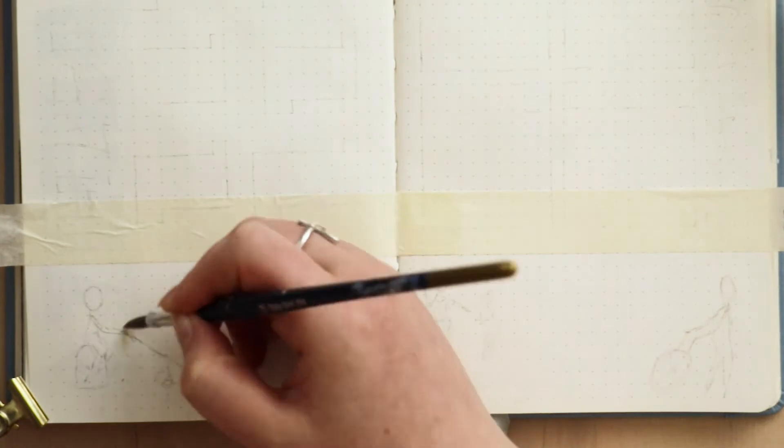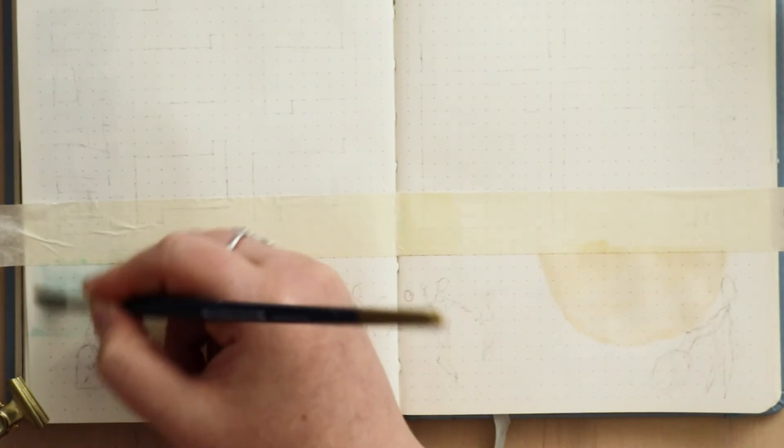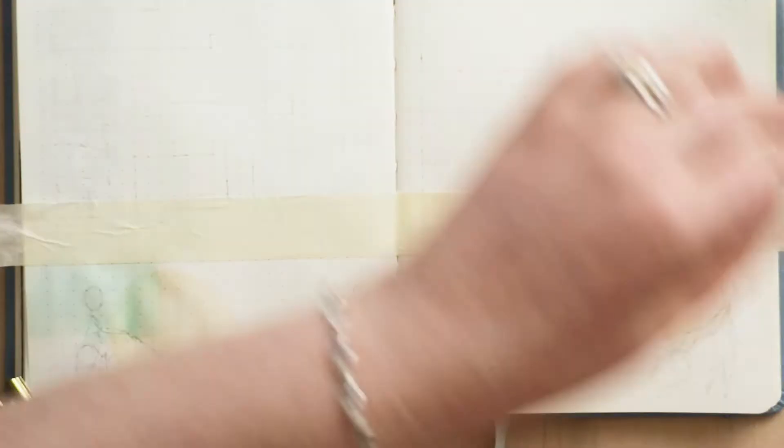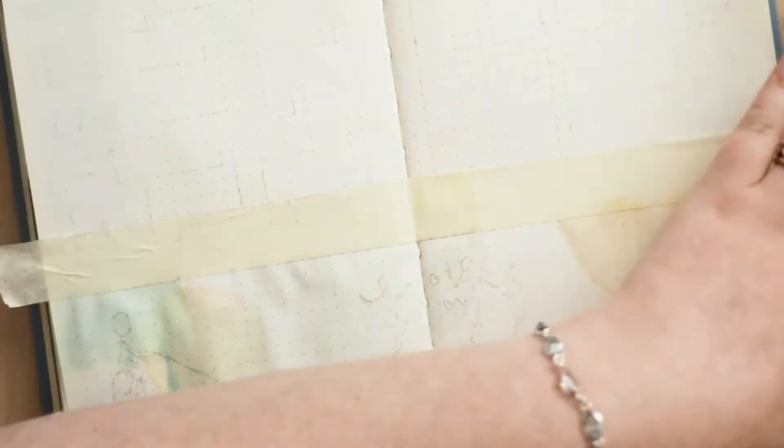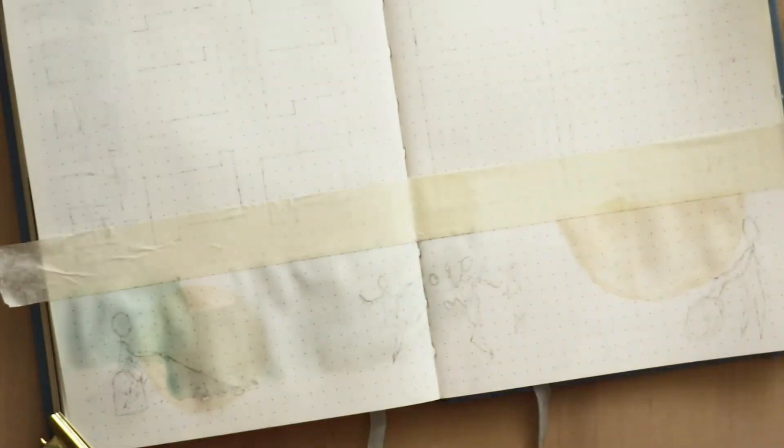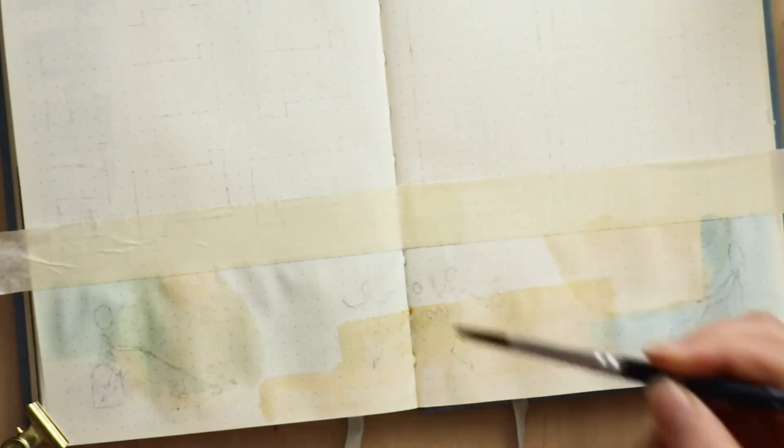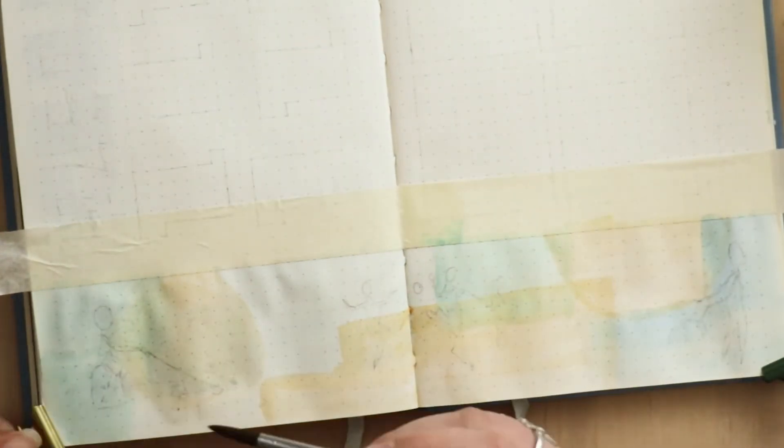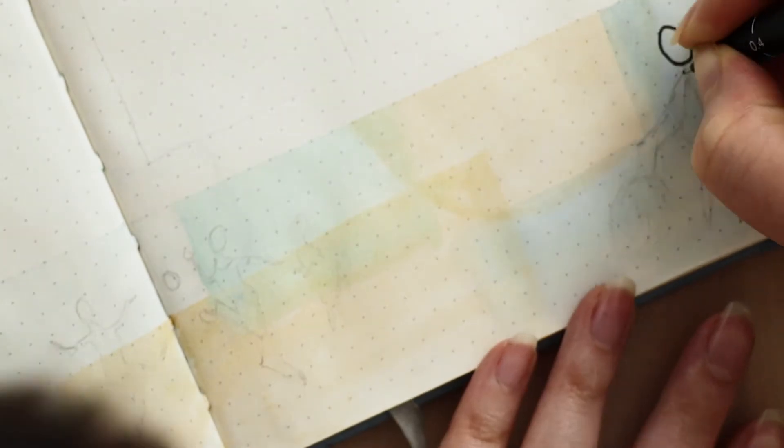So I taped off this bottom section here and just did the same as I did on the cover page. Similar color palette with blues and yellows, yellowy browny ochre kind of colors and green and just did random shapes and blobs and squares across the bottom of the page. There is nothing more satisfying than peeling the tape back when it works.